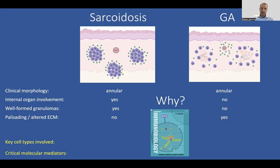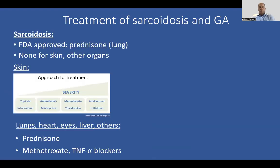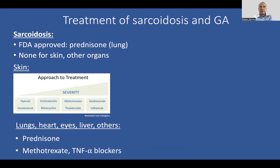We're really interested in immunology in our lab, and we wanted to take these clinical and histologic observations and dissect the immunology to understand why we're actually seeing these different patterns and, of course, identify the critical molecular mediators. I want to take a brief segue and talk about treatment of sarcoidosis and granuloma annulare, which will contextualize a lot of the rest of the talk.